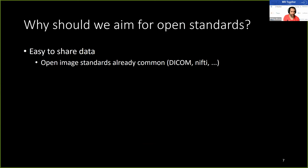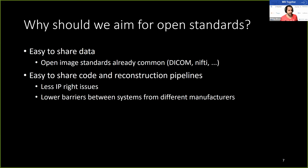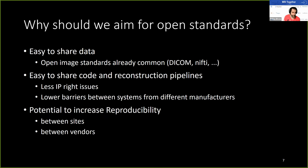Why should we aim for open raw data standards? First, open standards make it easier to share data, especially across sites and platforms — that's why open image standards such as DICOM or NIfTI are already pretty common. It's also easier to share code and reconstruction pipelines, there are fewer intellectual property issues, and there are lower barriers between systems from different manufacturers. Together, this leads to the potential for increased reproducibility between sites and also between vendors.